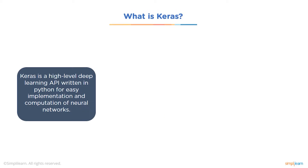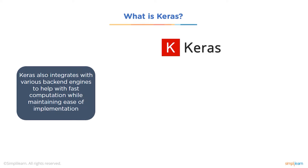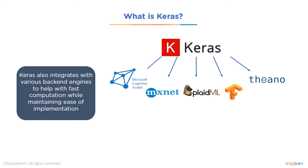Next, let's look at Keras. Keras is a high-level deep learning API written in Python for easy implementation and computation of neural networks. It is an open source software library that provides a TensorFlow interface for artificial neural networks, running on top of TensorFlow. Up until version 2.3, Keras supported multiple backends including TensorFlow, Microsoft Cognitive Toolkit (CNTK), R, Theano, and PlaidML. As of version 2.4, only TensorFlow is supported. It is designed to enable fast experimentation with deep neural networks, focusing on being user-friendly, modular, and extensible.